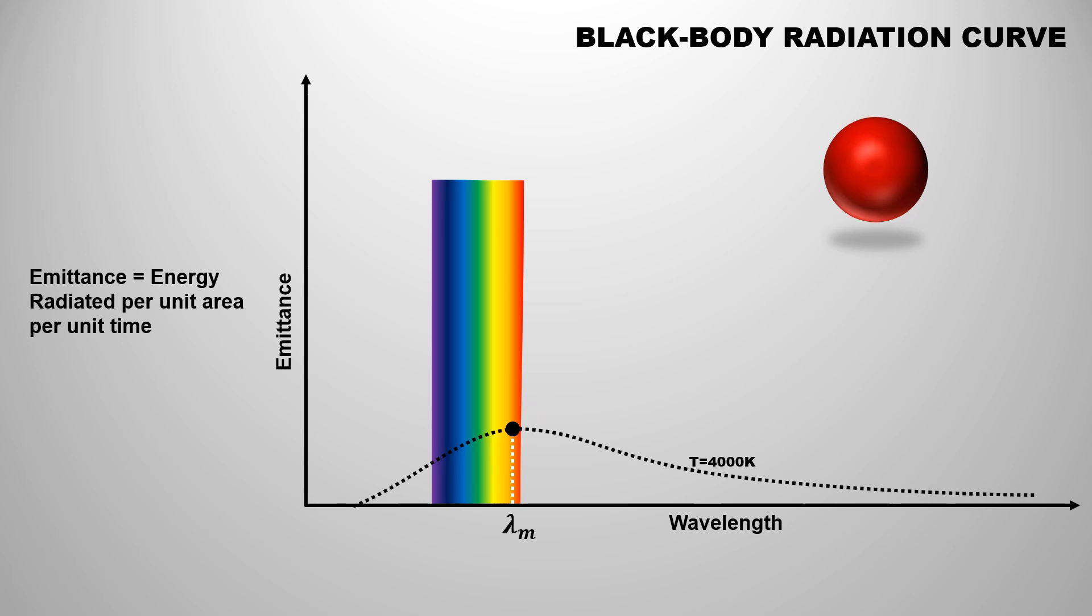Now if the temperature of the blackbody increases to 5000K and we draw the radiation curve, this curve is also similar to the previous curve. The only difference is that on increasing the temperature, the dominating wavelength is displaced toward the left side, toward the shorter wavelength. Here the curve has displaced in both horizontal and vertical direction. In this video, we will focus only on horizontal displacement. At this temperature, the corresponding color of the dominating wavelength is green. Hence, the blackbody is seen green in color.